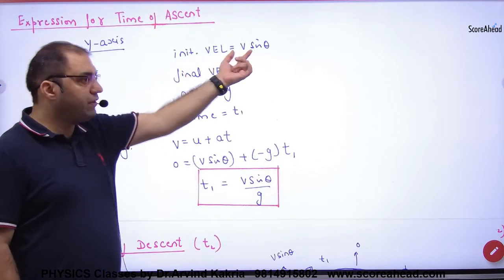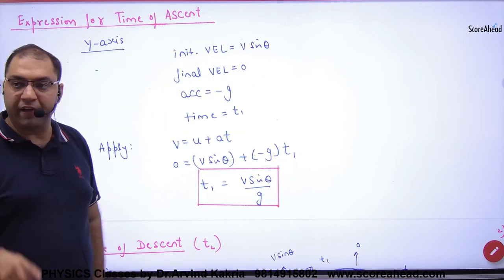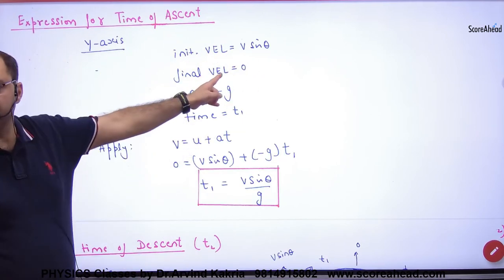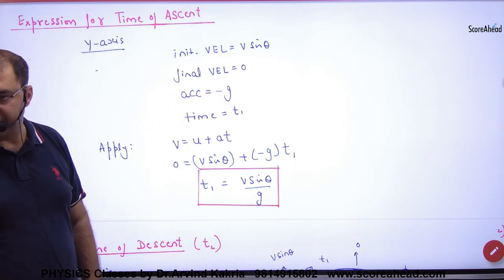Initial velocity vsinθ, y-axis initial velocity vsinθ, final velocity at topmost point is 0. And when the body is going up, the acceleration due to gravity is minus g.